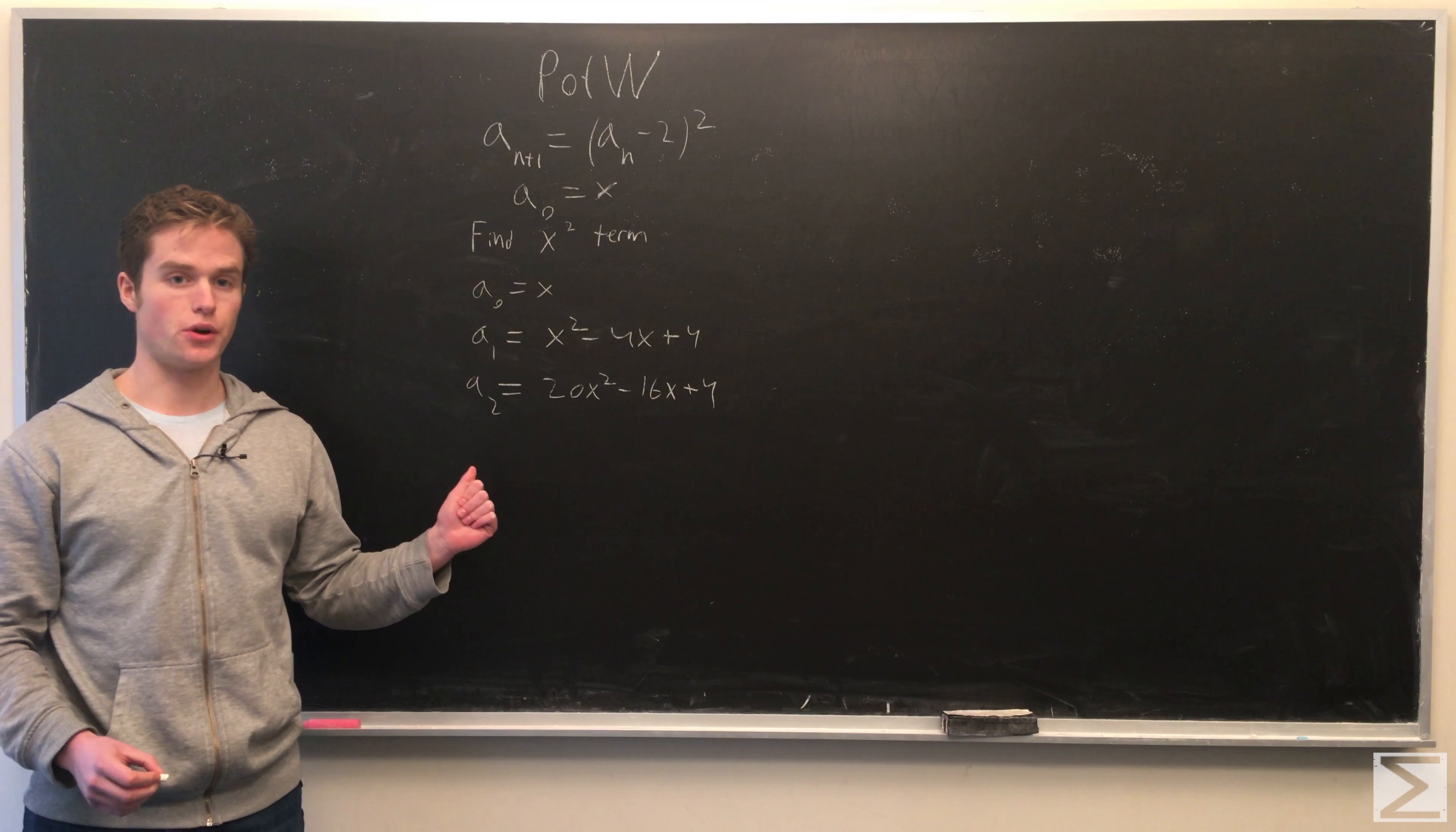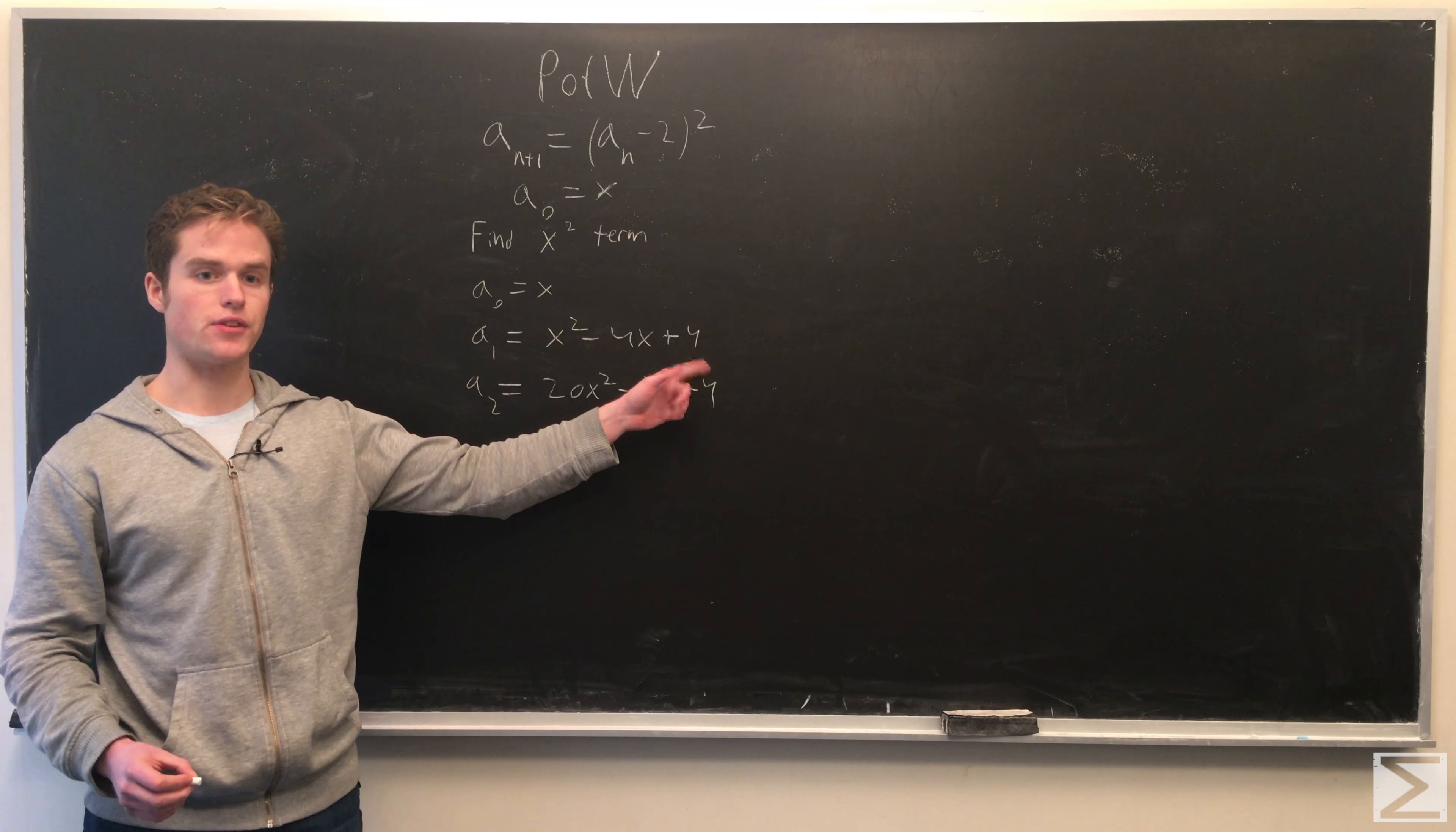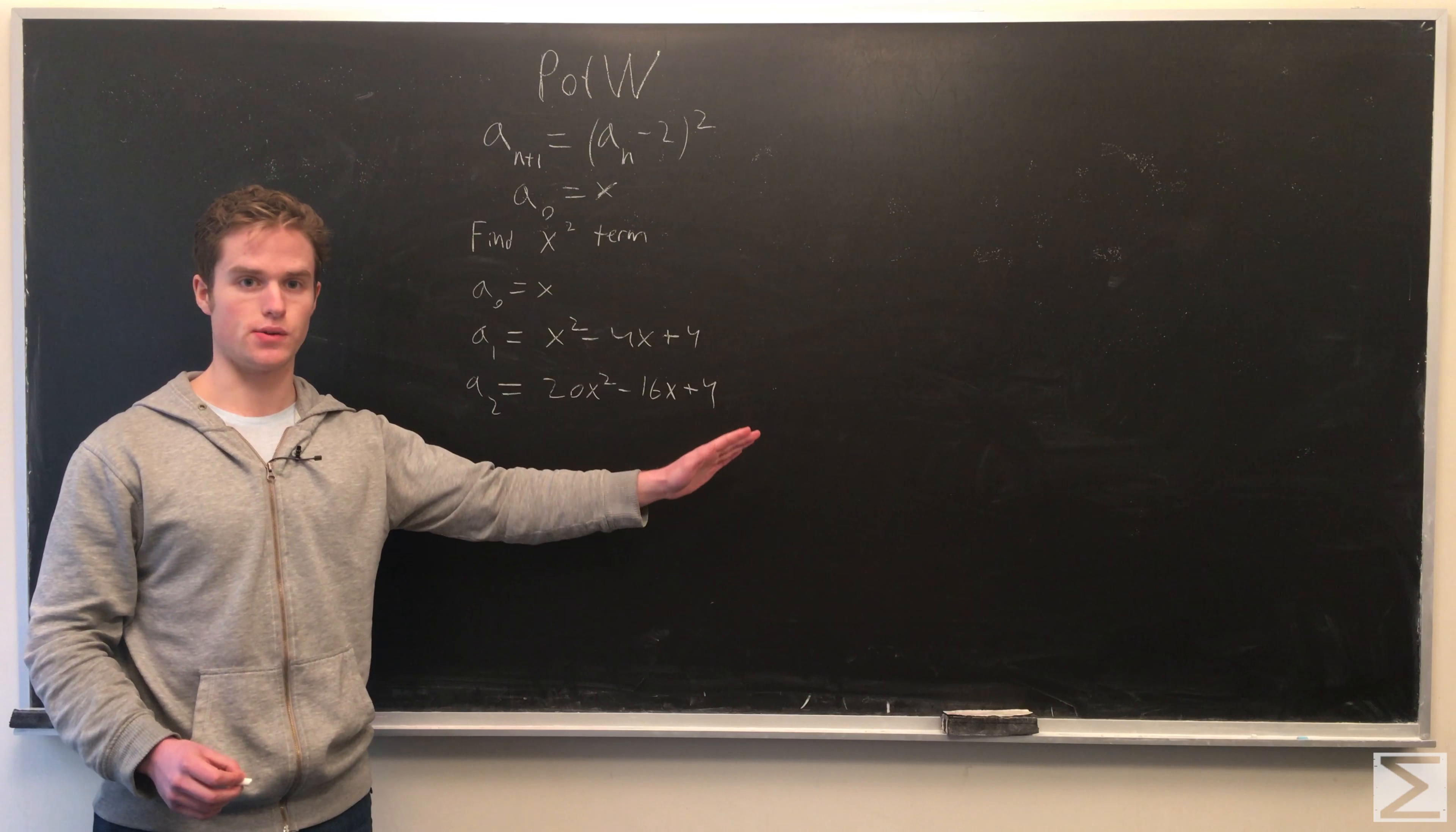The first thing we should note is that this thing here, every time we go to the next term, this 4 is always a 4. So, for an, the coefficient of x to the 0 is just always 4.